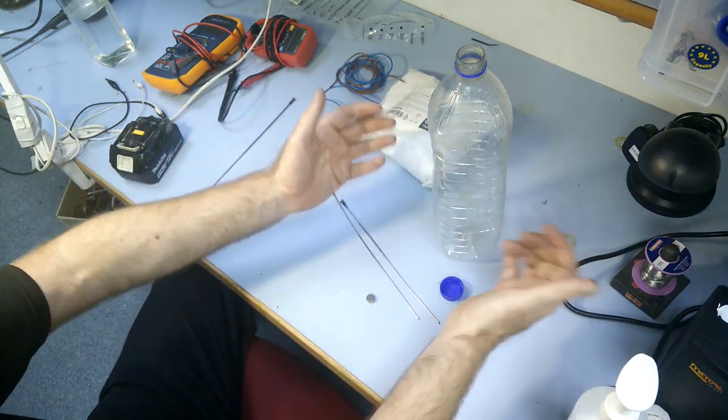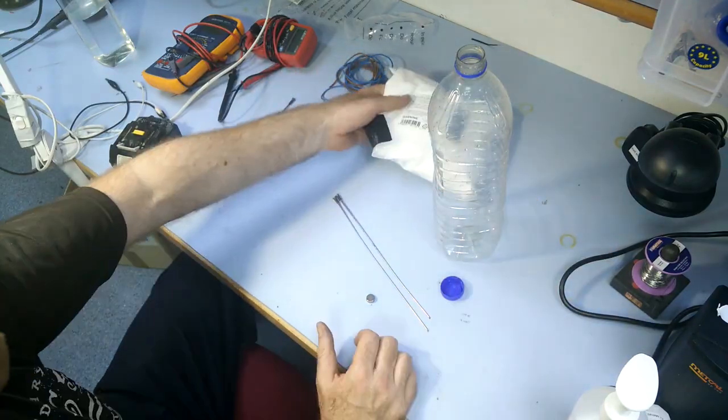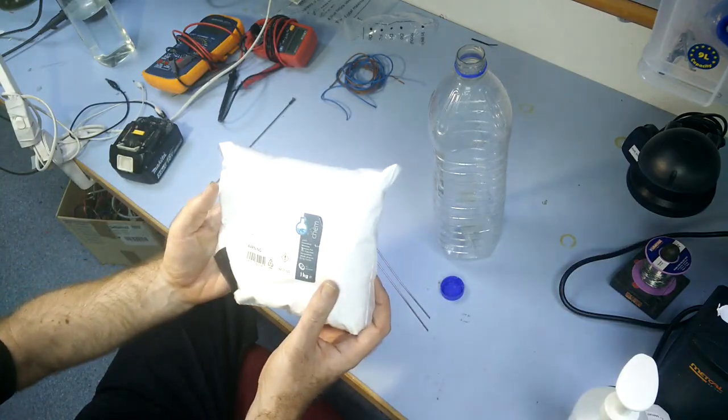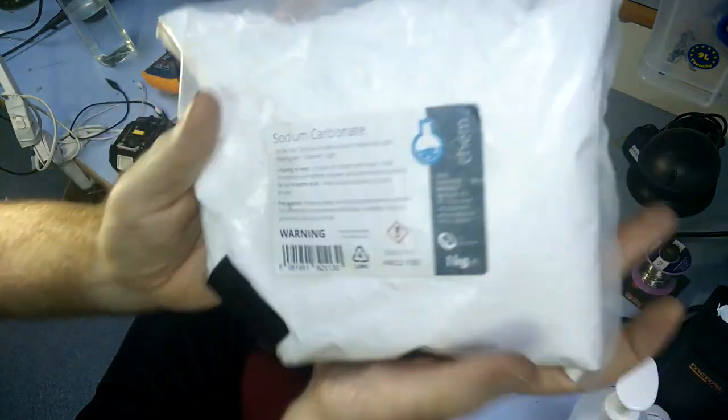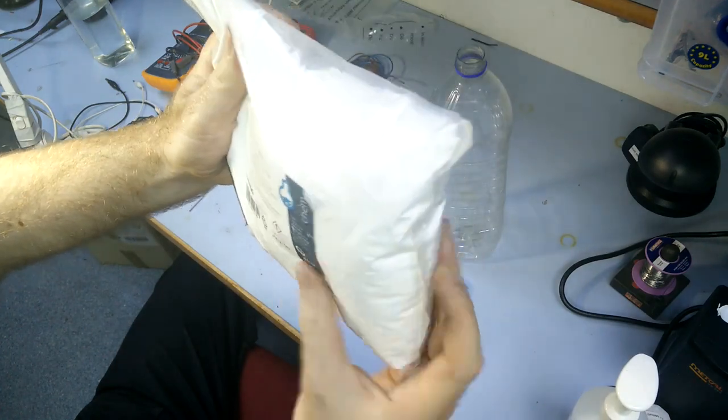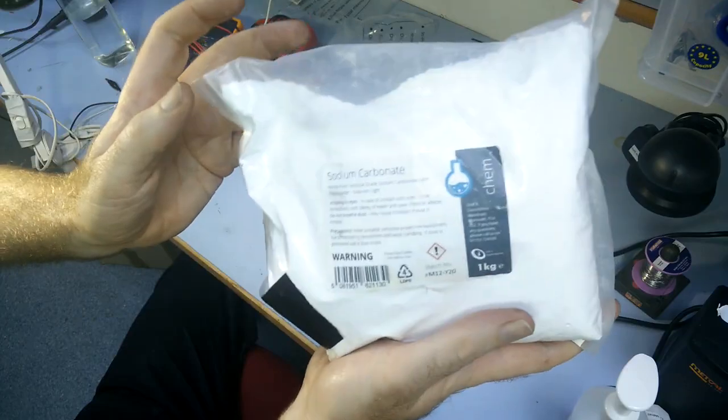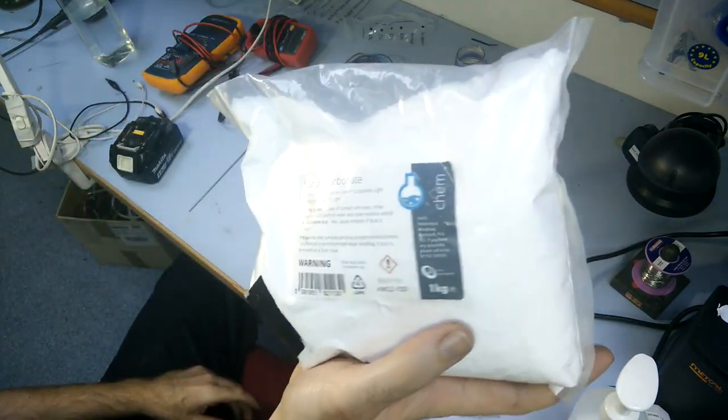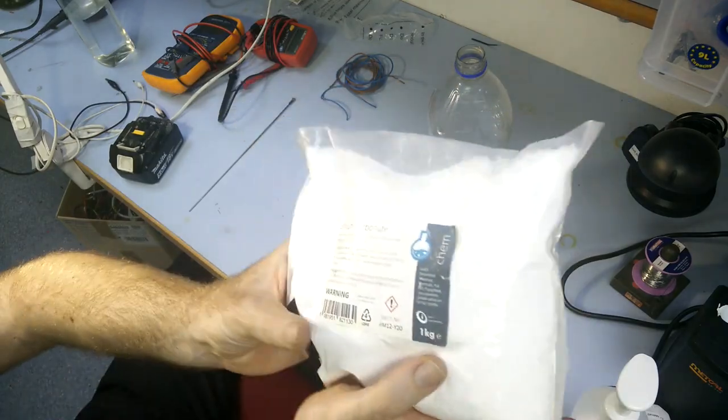You will definitely know if you're using non-stainless steel in the first three seconds of actually using the thing, because you're going to start getting a lot of black precipitate coming off one of those electrodes. The other main material is sodium carbonate, which is just washing soda. This looks like it's a chemical that I've had to order in, it's just because I've got a bag of it. You can get this in pharmacies, it's washing soda, it's a household item, it's completely non-toxic.